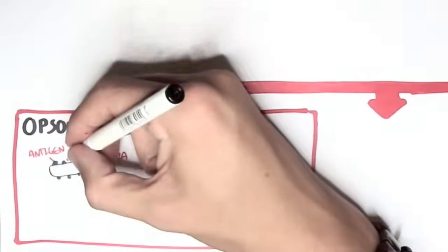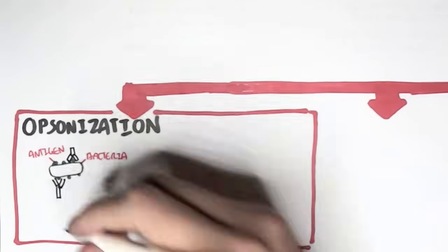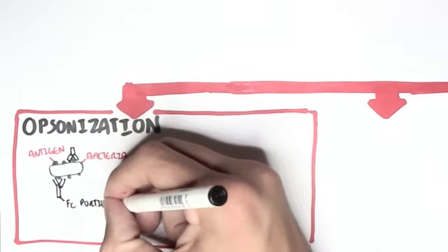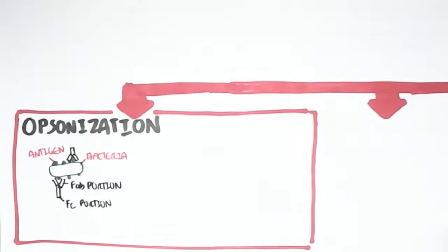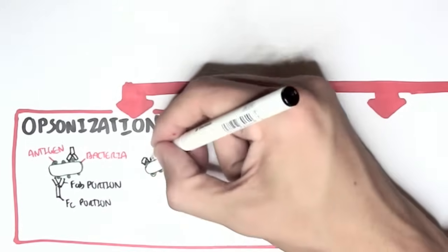here we have a bacteria, and the bacteria contains antigens. The IgG antibody can bind onto the antigen of the bacteria through the fab portion. And as it binds to the bacteria with the fab portion,